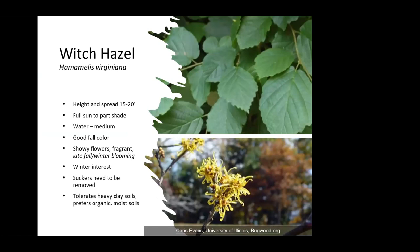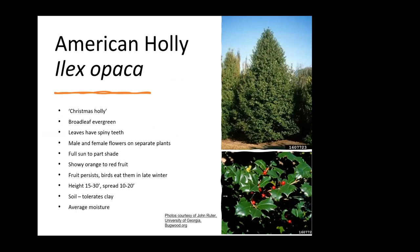American holly is a broadleaf evergreen that is native to the United States, getting fifteen to thirty feet tall with a spread of ten to twenty feet. The leaves have spiny teeth — this is the Christmas holly people cut in winter to decorate the house with pretty red berries. The birds eat these berries in late winter after they've fermented — my neighbor had a great big one, and in February the birds ate all the berries and she said it sounded like they were drunk. Well, those berries are fermented.